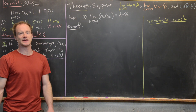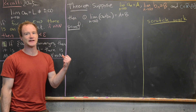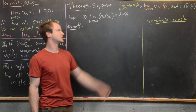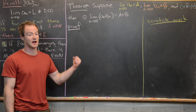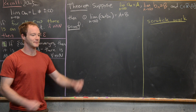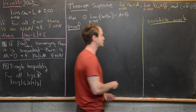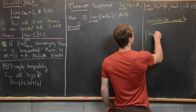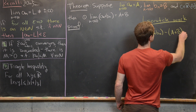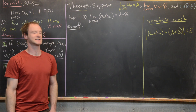Next we prove that the limit as n goes to infinity of a sub n plus b sub n equals a plus b — in other words, the sum of the limits. We use the same scratch-work strategy. What we want to end up with is |aₙ + bₙ − (A + B)| < epsilon, which will prove this limit.